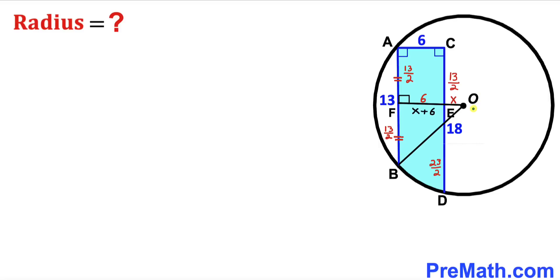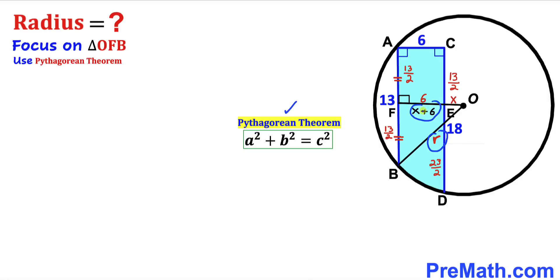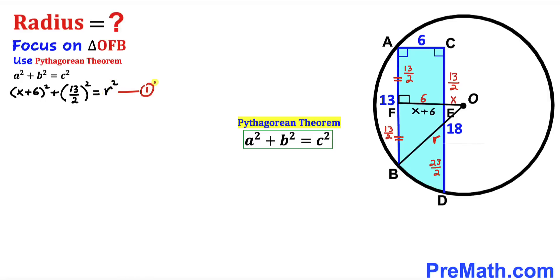Next, I connect center O to point B. OB is the radius of the circle, labeled R. Focusing on right triangle OFB and applying the Pythagorean theorem — A² + B² = C² — our hypotenuse is R, and our two legs are (X + 6) and 13/2. So we get: (X + 6)² + (13/2)² = R². This is equation 1.